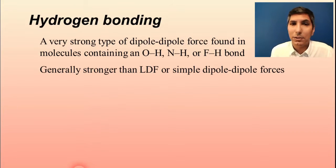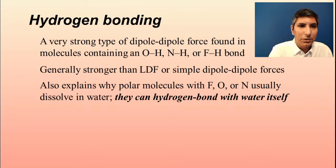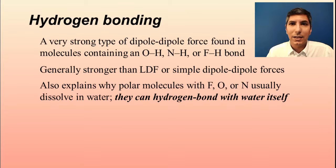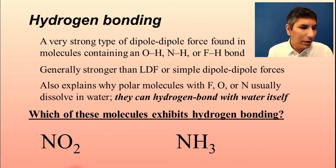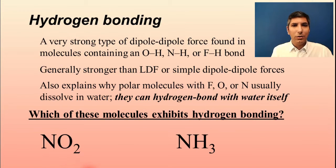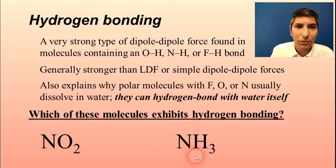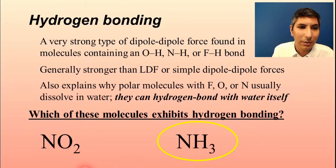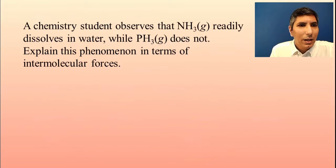Generally these are a whole lot stronger than London dispersion forces or everyday dipole-dipole forces. This also helps explain why if you have a polar molecule that has fluorine, oxygen, or nitrogen in it, it's probably going to dissolve in water, because molecules like that can hydrogen bond with water itself. Looking at an example, we can determine which molecule will have hydrogen bonding — it's the one with one of those three bonds, which would be NH3, because it has a nitrogen-hydrogen bond. The N–O bond won't work because you have to have hydrogen for hydrogen bonding.